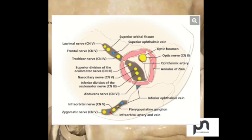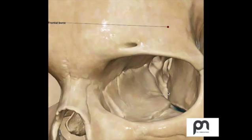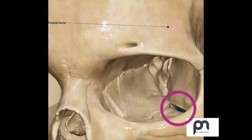This inferior orbital fissure can be a bit tricky to locate but it is important to understand its boundaries. Just for basic sake, let's understand that the inferior orbital fissure is inferior in the orbit, that is at the floor of the orbit.